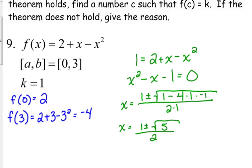Now, let's figure out. We've got 1 plus the square root of 5 over 2, and we have 1 minus the square root of 5 over 2. I don't think both of those are in my interval.